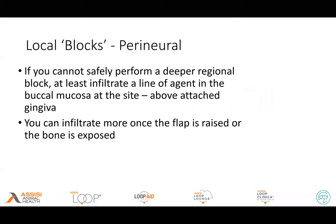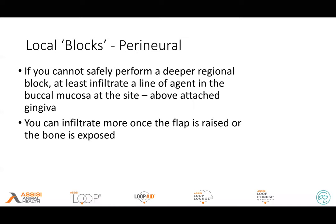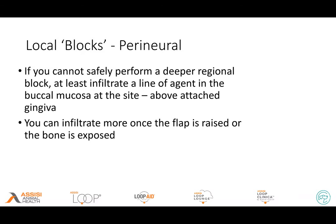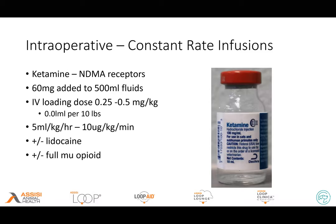I do a lot of bilateral blocks on the mandible — I just make sure I get my block amount right next to the bone at that caudal opening of the mandibular canal and try not to spread the volume all around that sublingual area. If you can't safely perform a deeper regional block, at least get some of the local agent into the buccal mucosa above the attached gingiva. Since attached gingiva is closely attached to the bone underneath, I usually do a line block in the softer, looser buccal mucosa above the site, and once that flap is raised you can infiltrate more local anesthetic.